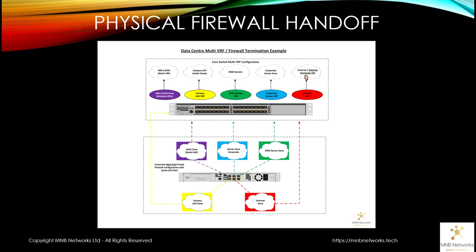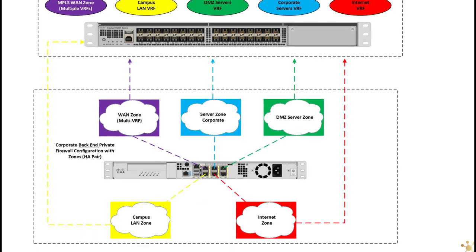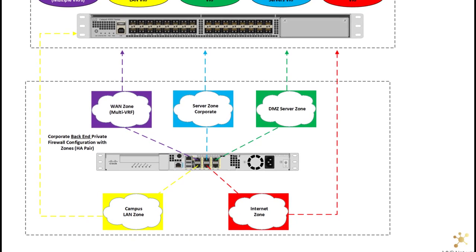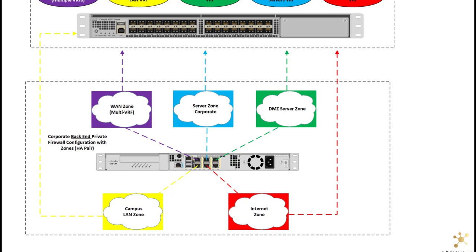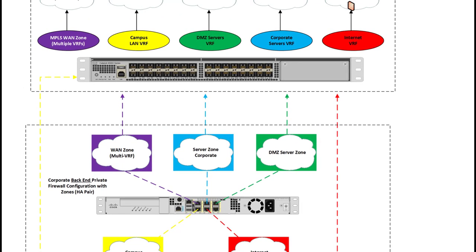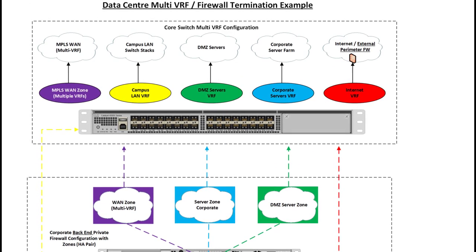This diagram shows an illustration of how physically things could hand over if you split your firewall physical interfaces into segments. Different physical ports might have different usage on the network. We have the WLAN zone which might have multiple VRFs handed off.